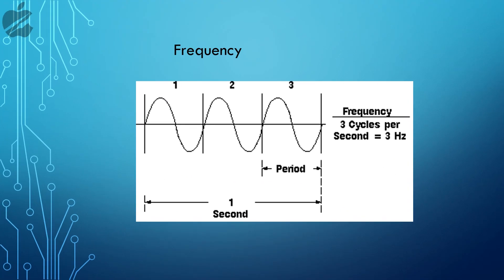Frequency is the number of wave cycles that pass a fixed place in a given amount of time.